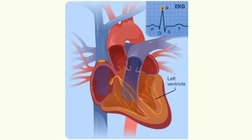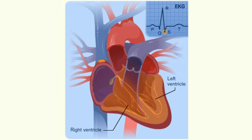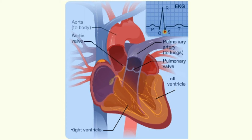The left ventricle of your heart contracts an instant before the right ventricle. On an EKG, the R wave marks the contraction of your heart's left ventricle. The S wave marks the contraction of your heart's right ventricle. The contraction of your heart's right ventricle pushes blood through the pulmonary valve to your lungs. The contraction of your heart's left ventricle pushes blood through the aortic valve to the rest of your body.